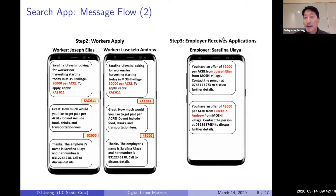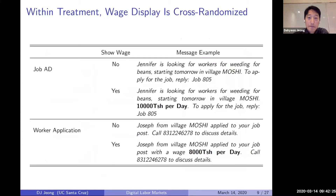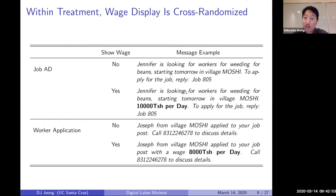The employer then receives worker applications in their phone. On top of this, I also randomized whether wage information is shown in the job ad and in the worker application. The idea was to isolate the impact of explicitly disclosing the wage in the job ad and application from just sharing job and worker availability. The only difference between the disclosed and non-disclosed versions is whether you see the wage offered or not.